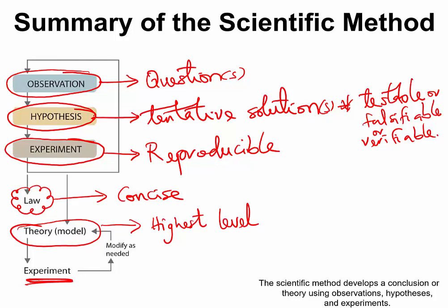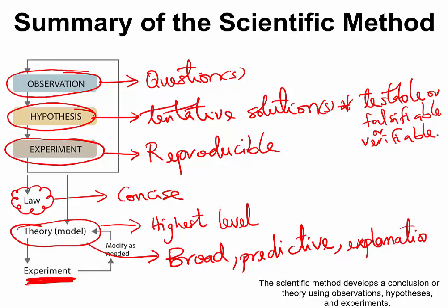But even then, the theory will still be tested. People would always test it. Theory is broad because a lot of scientists would have worked on it. It is predictive like scientific law. It can tell you the future and it offers explanations on how the hypothesis that became law that is now the theory works.